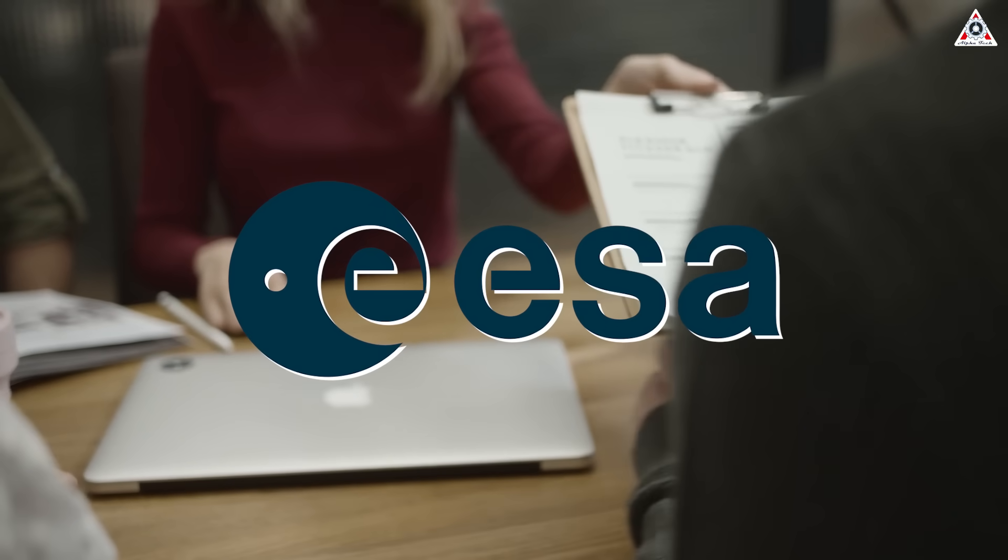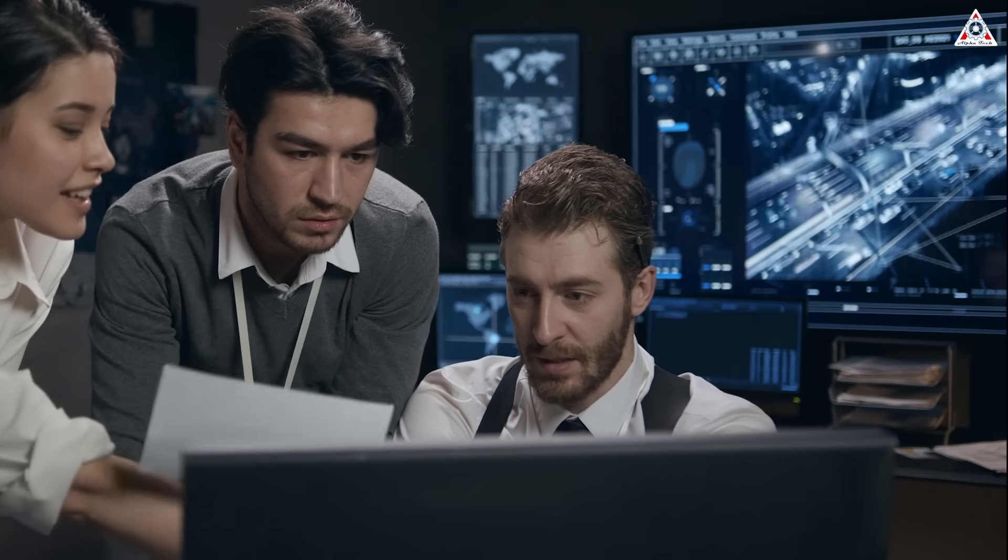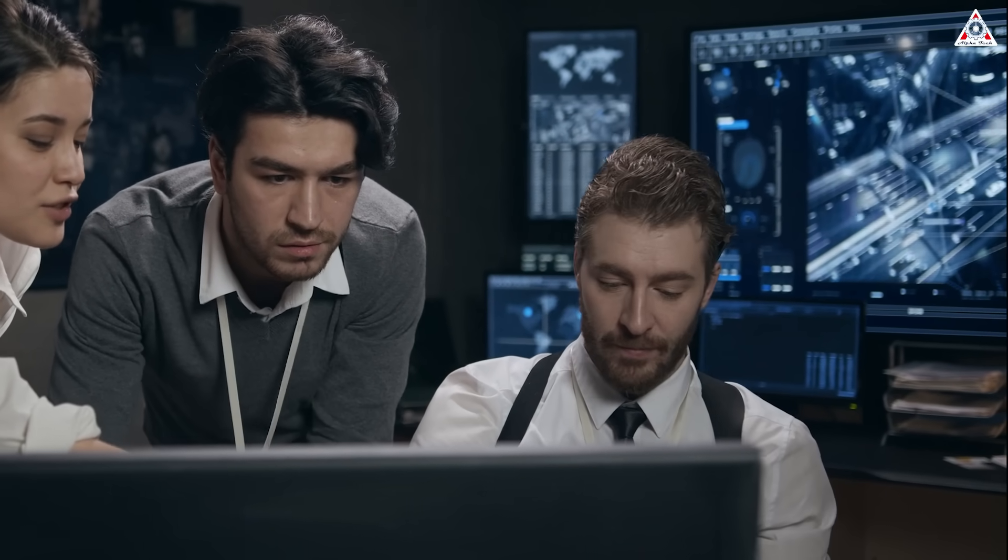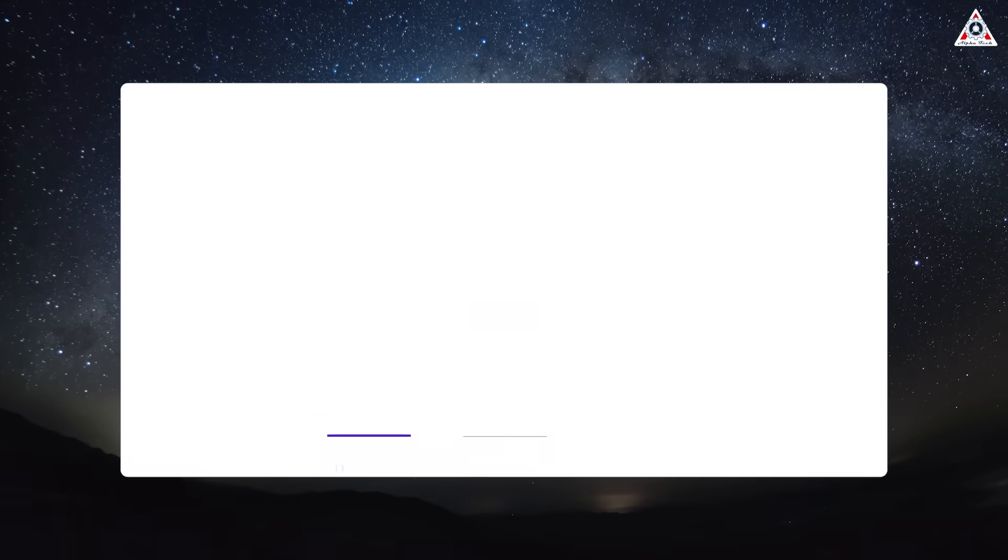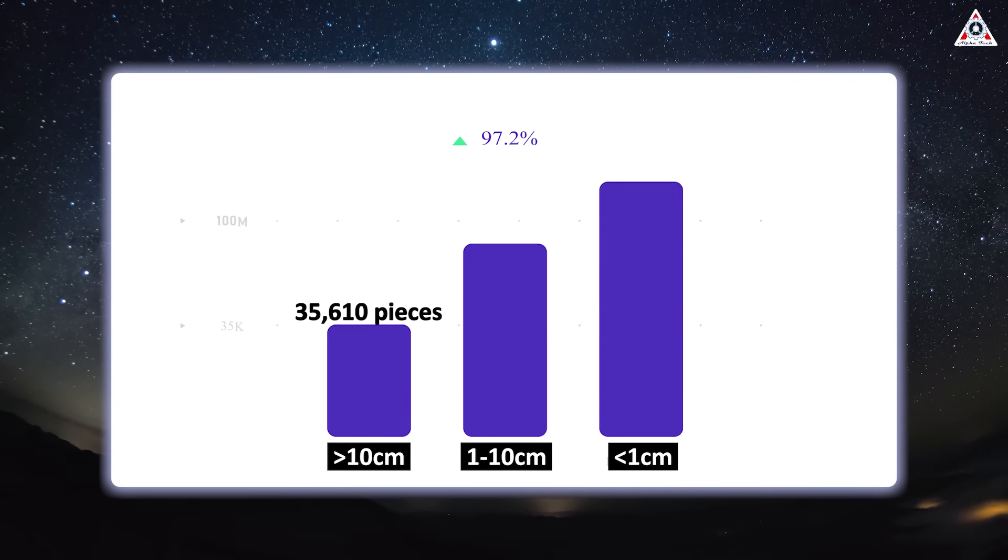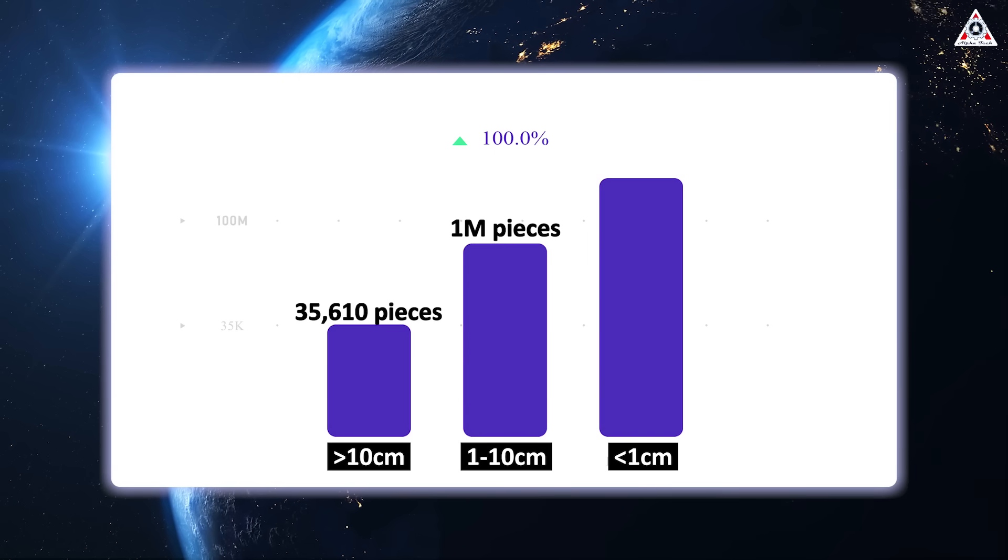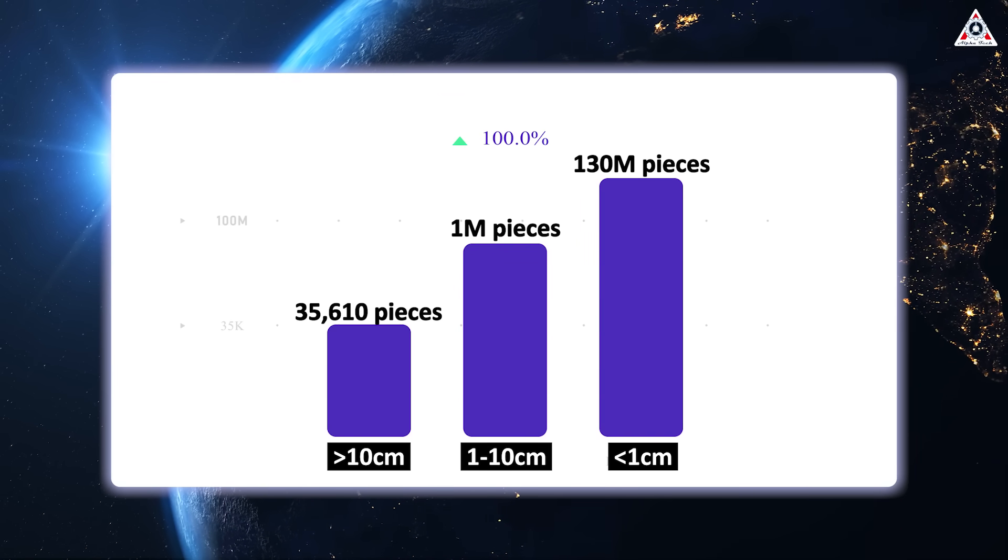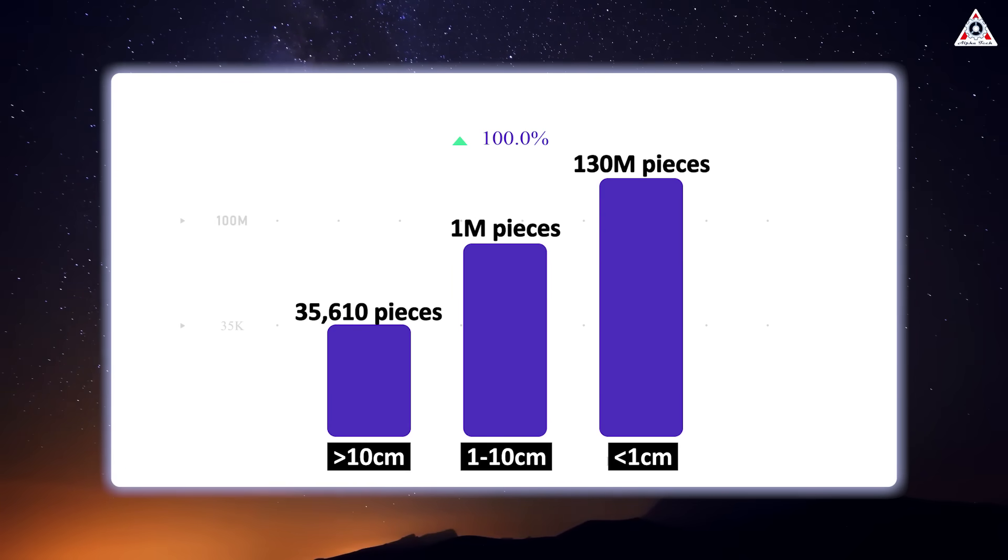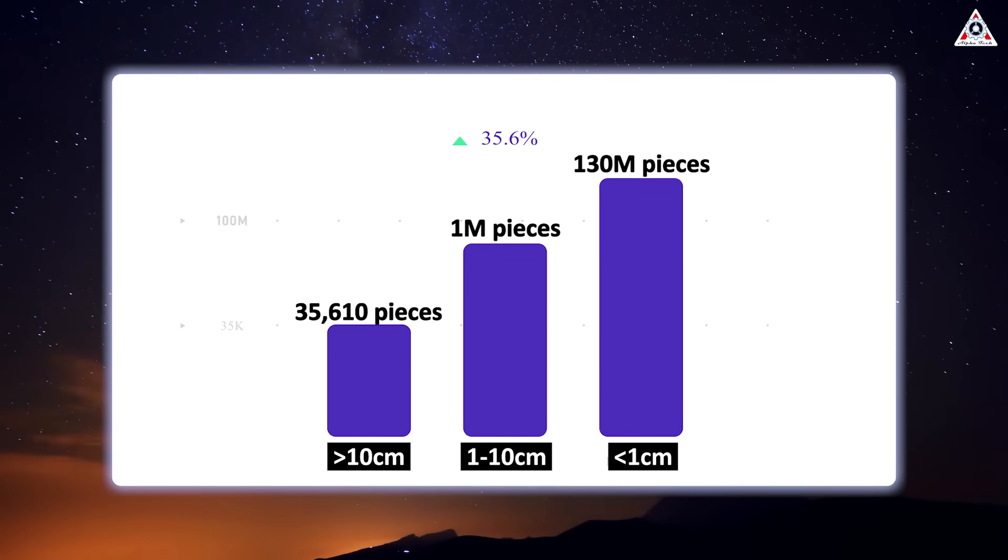According to statistics from the European Space Agency, ESA, as of November 2023, the World Space Surveillance Network has recorded 35,610 pieces of debris larger than 10 centimeters, about a million pieces of debris from 1 to 10 centimeters, and that number is also up to 130 million with debris under 1 centimeter. That is crazy.